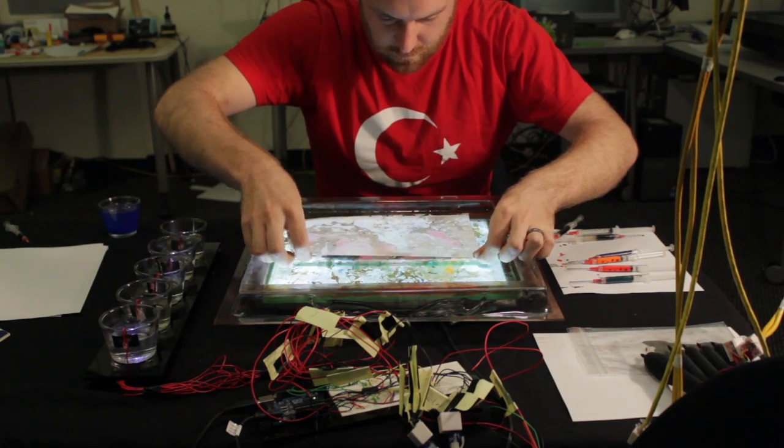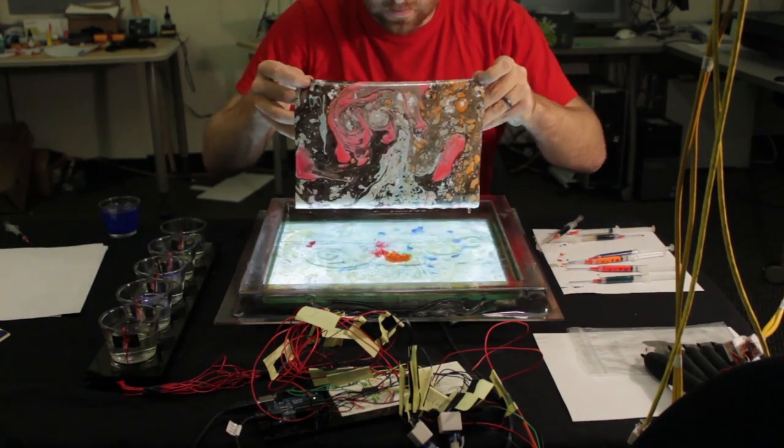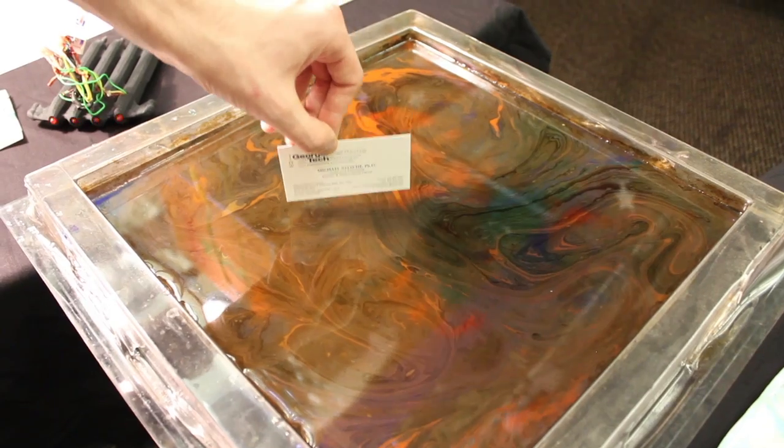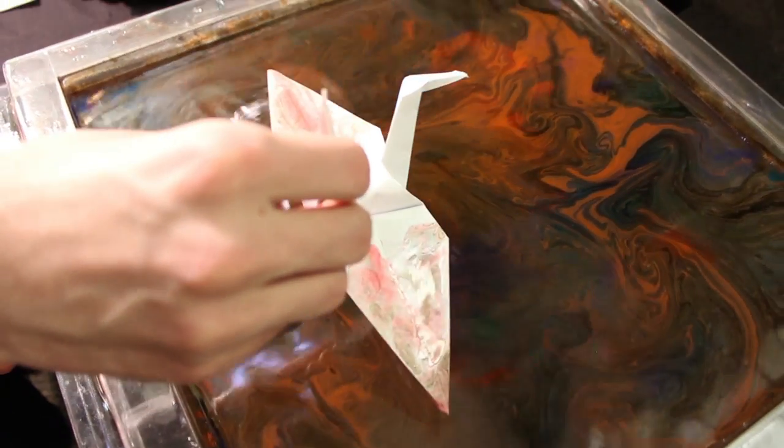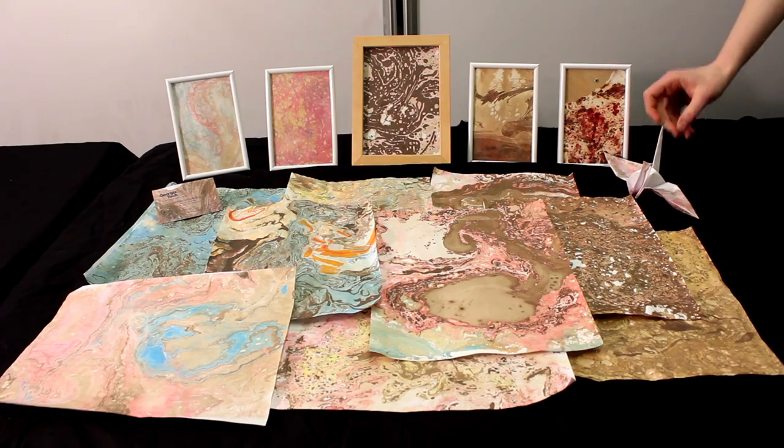Mirroring traditional ebru, designs can be saved onto sheets of paper, business cards, wedding favors, and even 3D origami shapes can be similarly imprinted. Paint Pulse provides a new way of exploring the materiality of an ancient craft through digitally manipulatable behaviors.